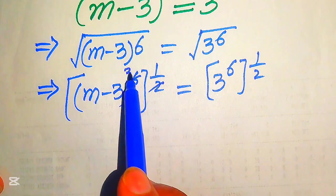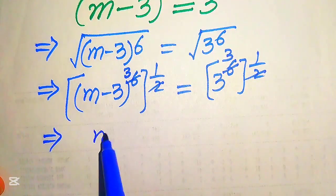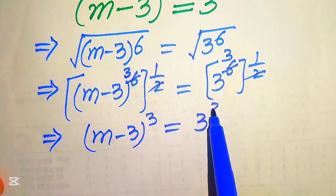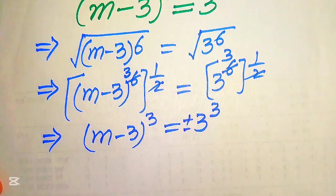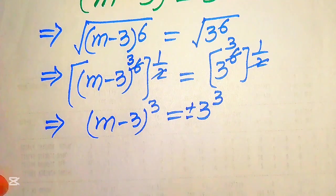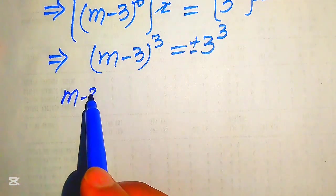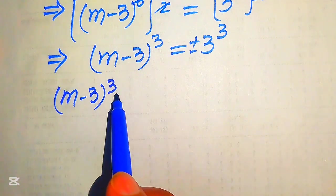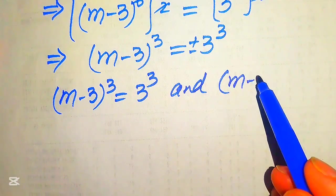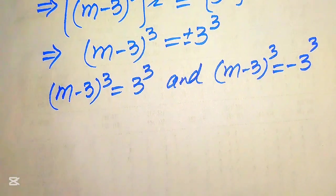Here 2 times 3 becomes 6 on both sides, so we get (m minus 3) to the power of 3 equals 3 to the power of 3. Because we took the square root on both sides, we write a plus-minus sign. We break this into two cases: the positive value gives (m minus 3)³ = 3³, and the negative value gives (m minus 3)³ = −3³.